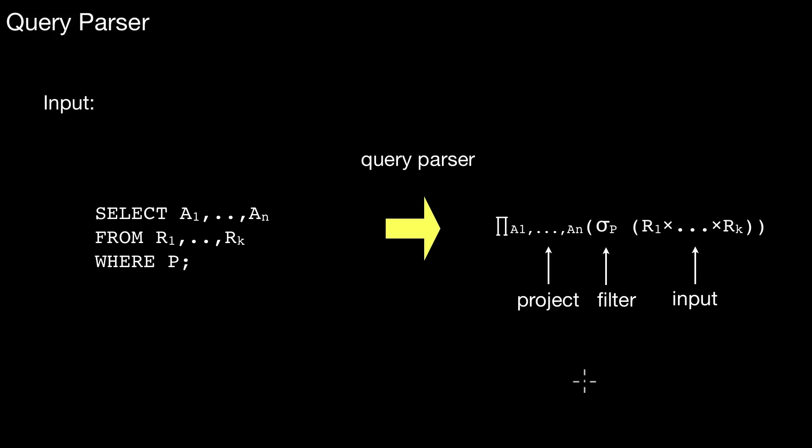In my previous video, I told you about the general architecture of the query optimizer. Now, let's look at the different steps that are performed by the query optimizer.